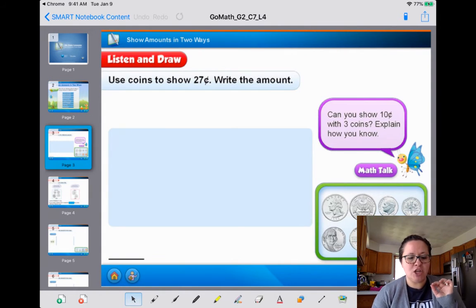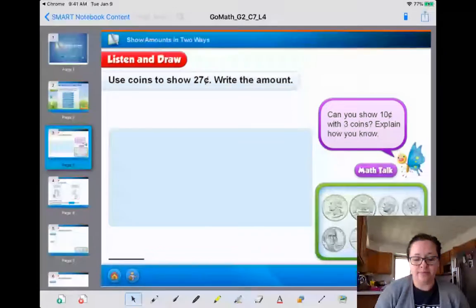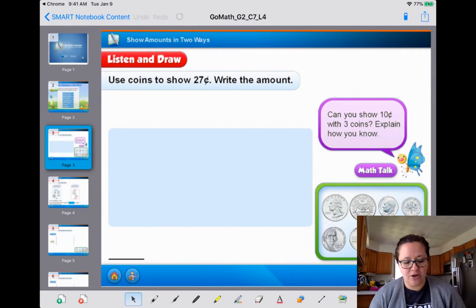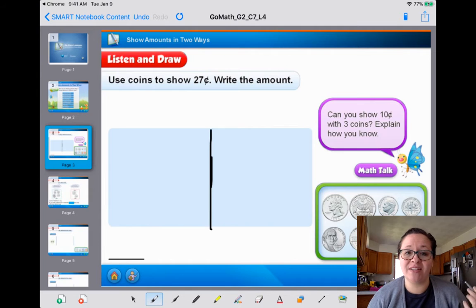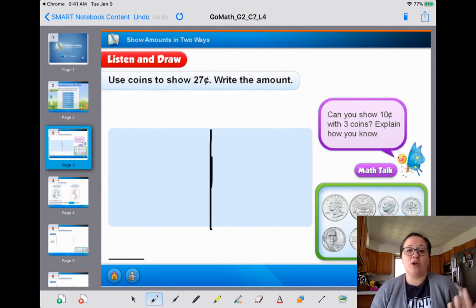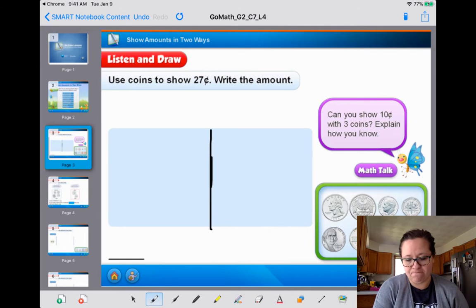So let's look at this. It says use coins to show 27 cents. Write the amount. And you know what I'm going to actually do today? I am going to make a line in the middle. That way I'm going to show 27 cents two ways because that's what we're working on today and we're going to just practice it already.